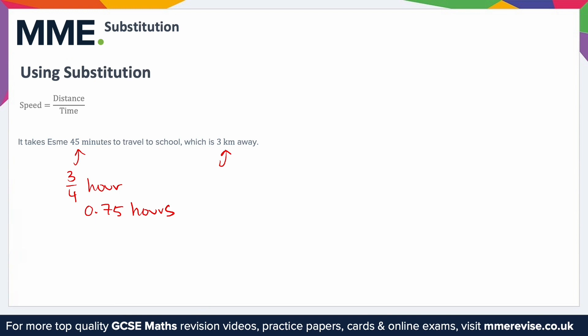From there, we can just substitute it straight into the equation. The distance is 3, so I've swapped distance on the top of the fraction for 3, and then time goes on the bottom — I can put either three quarters or 0.75. I'm going to put 0.75 for the sake of notation. So 3 divided by 0.75 works out as 4, and in this case we've done kilometres divided by hours, so this is 4 kilometres per hour.